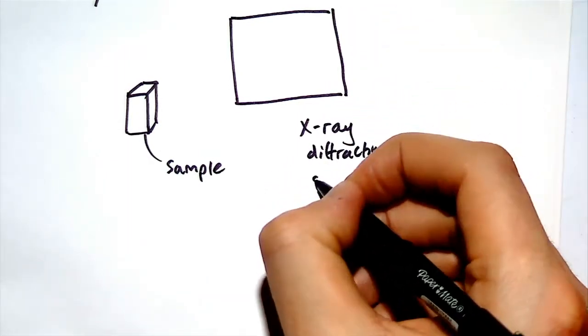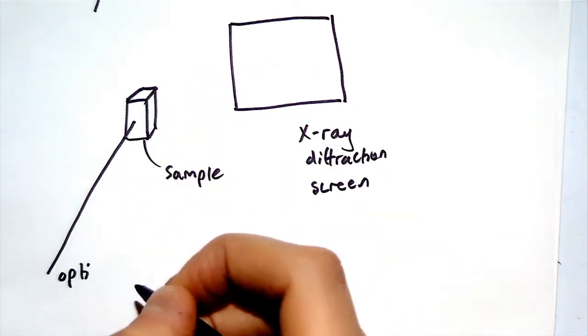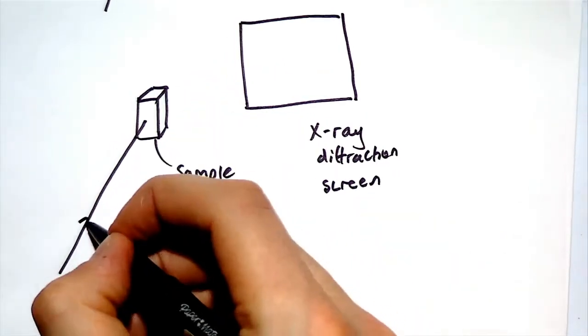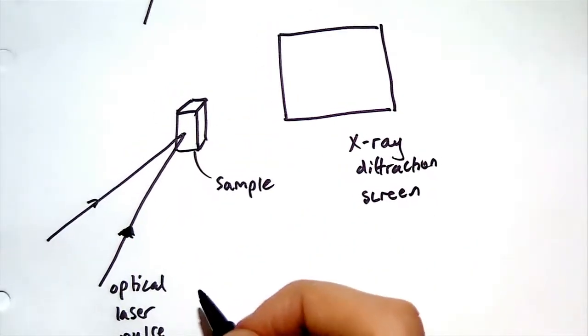A thin layer of sample is placed in front of an X-ray diffraction screen. By shining the optical laser followed by the X-ray pulse, we obtain a diffraction image on the screen.